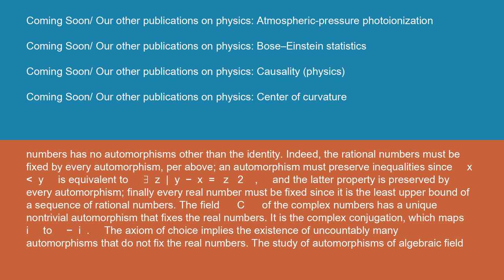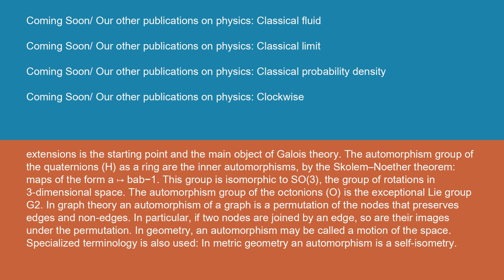The study of automorphisms of algebraic field extensions is the starting point and the main object of Galois theory. The automorphism group of the quaternions H as a ring are the inner automorphisms by the Skolem-Noether theorem: maps of the form a↦bab⁻¹. This group is isomorphic to SO(3), the group of rotations in three-dimensional space. The automorphism group of the octonions O is the exceptional Lie group G2.